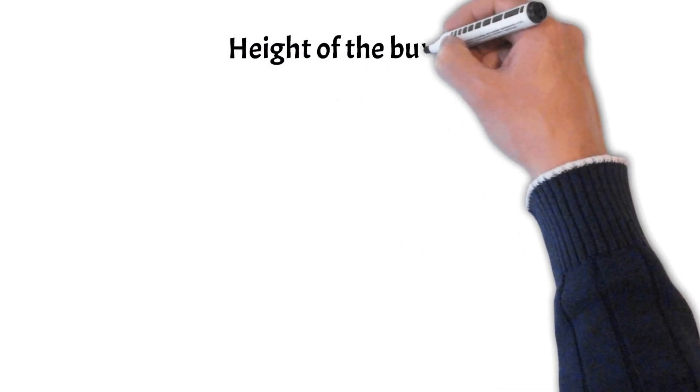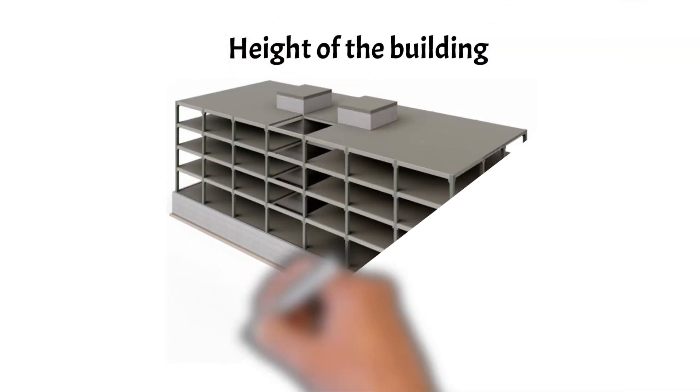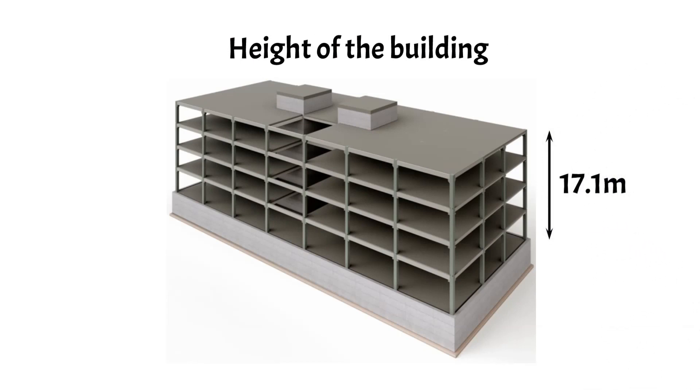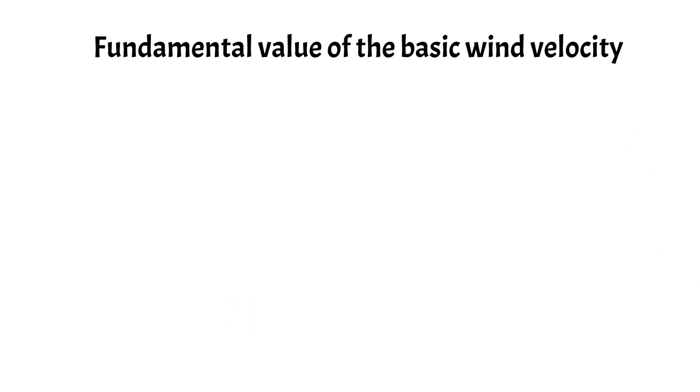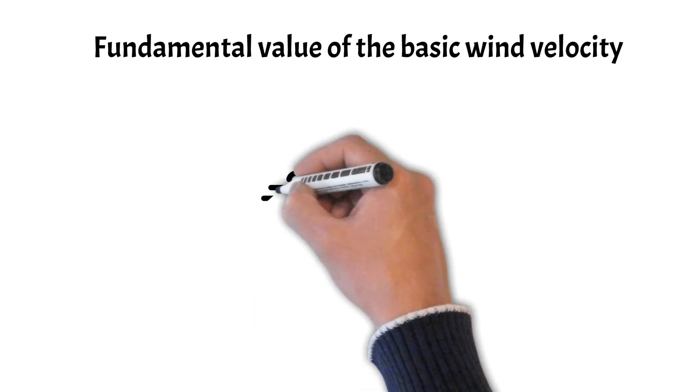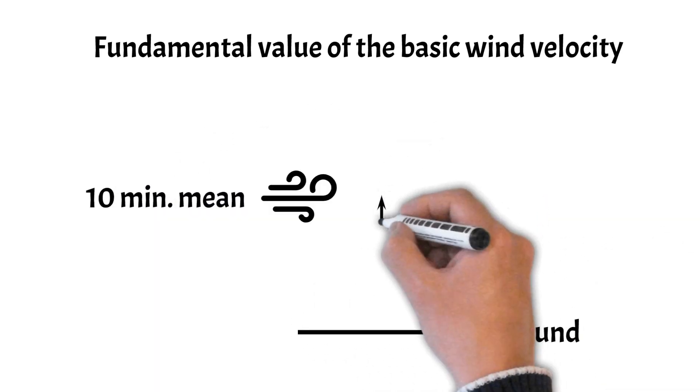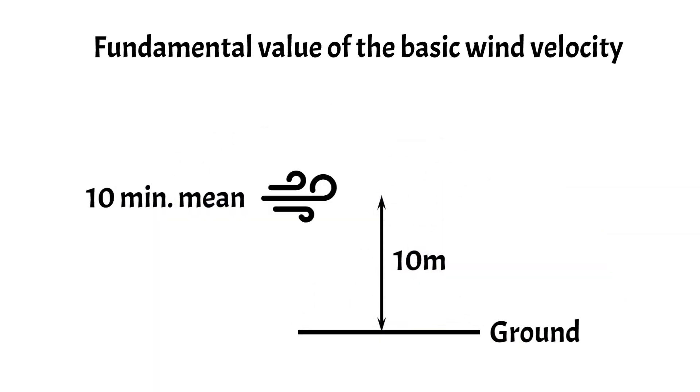At first we'll determine the height of the building above ground, which is in our case 17.1 meters. Next we'll find the fundamental value of the basic velocity from Eurocode. This parameter describes a 10-minute mean value at a height of 10 meters above ground and in open country terrain, which includes annual risks and some more parameters.